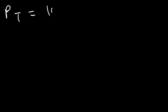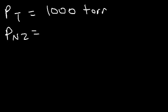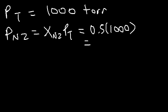Using the same values, let's assume the total pressure is 1000 torr. Calculate the partial pressure of each gas. Starting with the partial pressure of N2: the partial pressure is the mole fraction of N2 times the total pressure. The mole fraction of nitrogen gas is 0.5, so 0.5 times 1000 is 500 torr — the pressure exerted only by N2 molecules, since 50% of the molecules is N2.